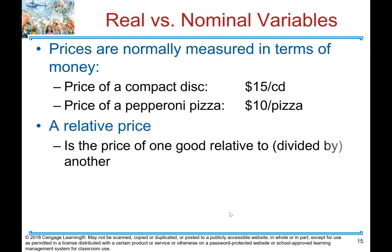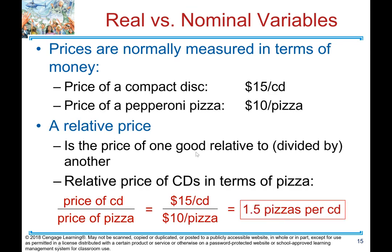Prices are normally measured in terms of money — for example, price of a compact disc is $15 per CD, price of pepperoni pizza is $10 per pizza. A relative price is the price of one good relative to another, i.e., divided by another. So the relative price of CDs in terms of pizza is $15 per CD divided by $10 per pizza, which equals 1.5 pizzas per CD.